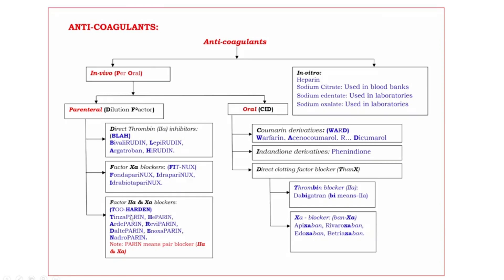Next, the last one: factor 2A and 10A blockers. These end with the suffix '-parin'. 'Parin' means pair blocker — parin means 2A and 10A.